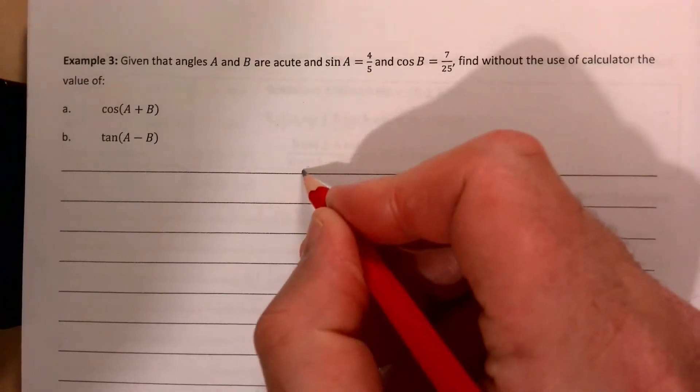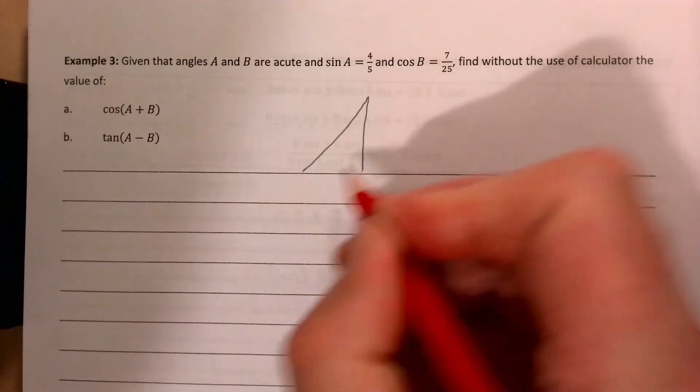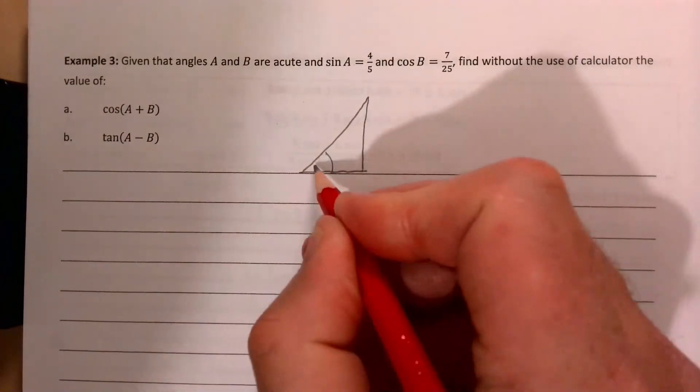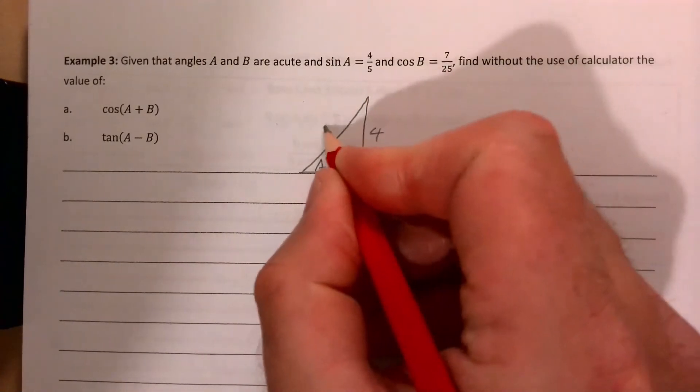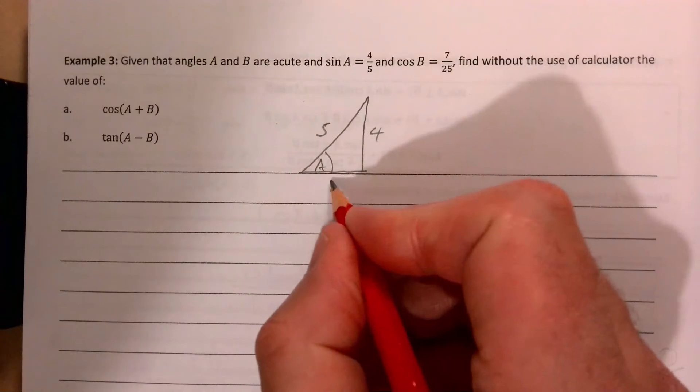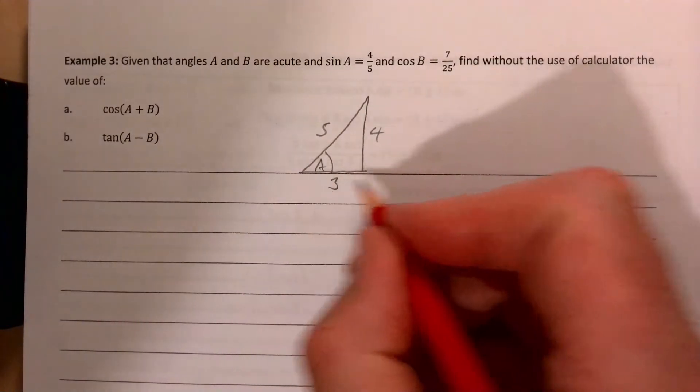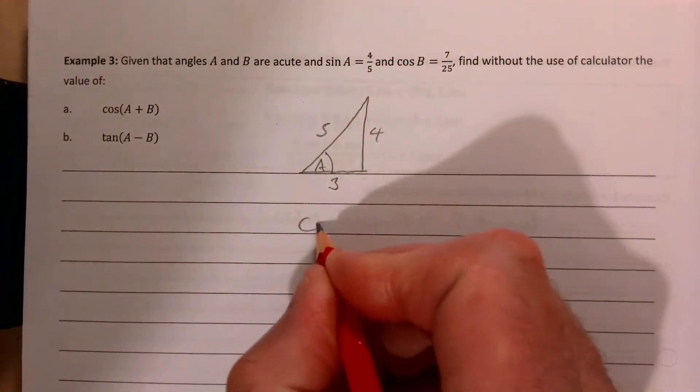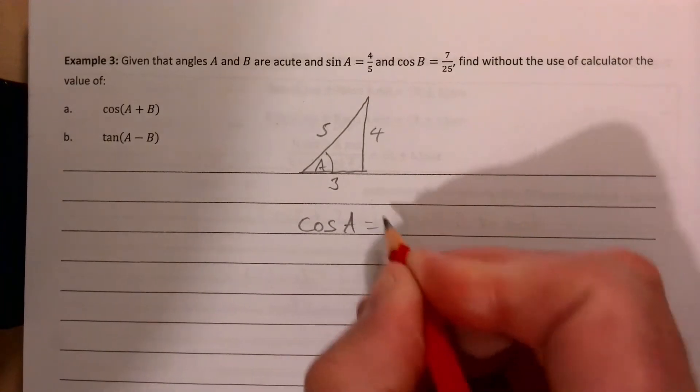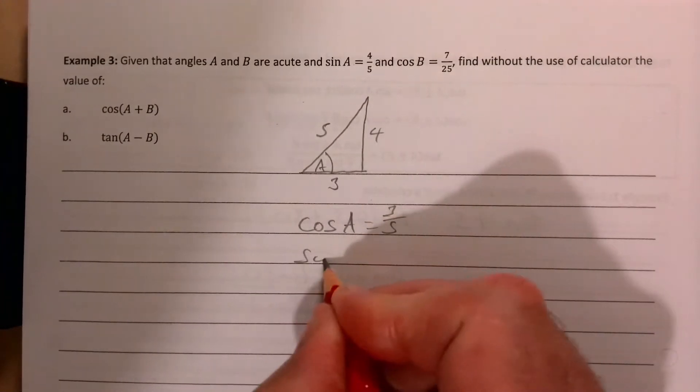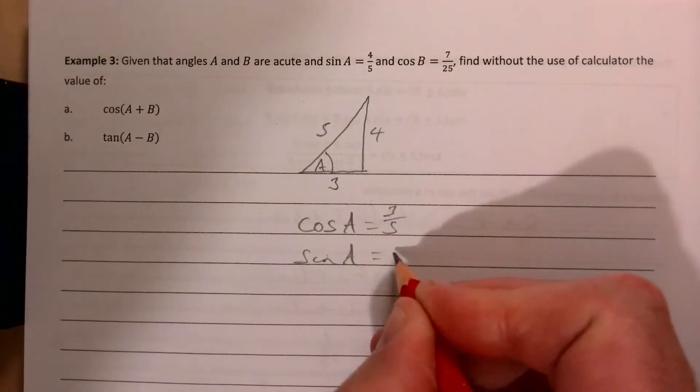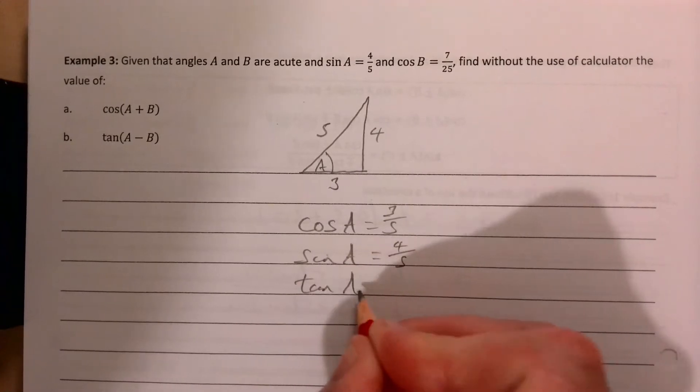We can set it up as follows. Here's our angle A. If sin A is 4/5, that means the opposite and hypotenuse are 4 and 5 respectively, meaning the adjacent is 3. So that means cos A is 3/5, sin A is 4/5, and tan A is 4/3.